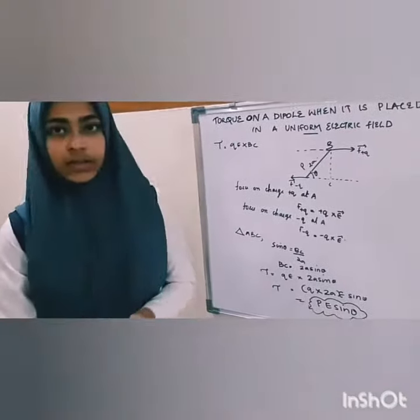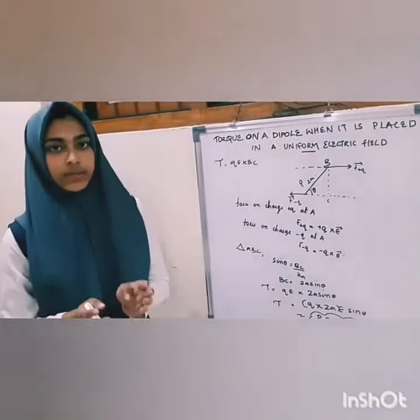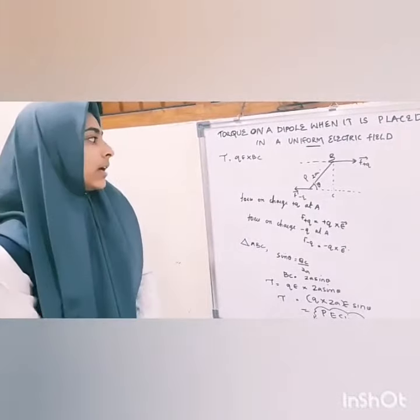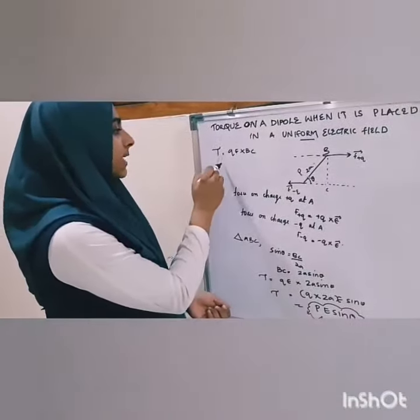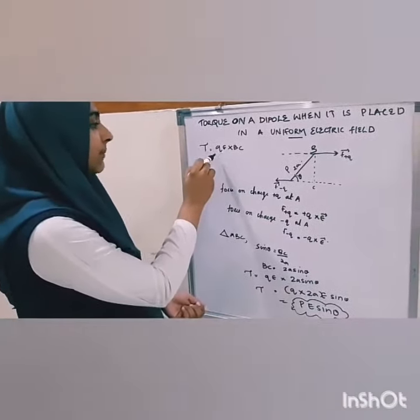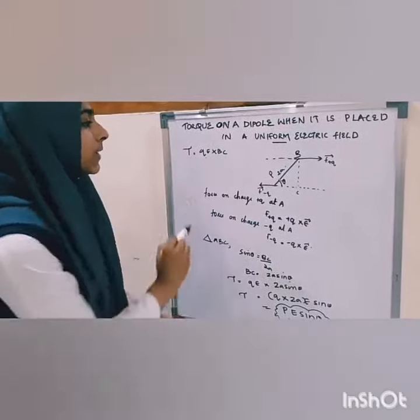What is Torque? Torque is the product of the magnitude of any one of the forces and the perpendicular distance between the two forces. Here, Torque equals QE into BC, where QE is the magnitude of any one of the forces and BC is the distance between the two forces.